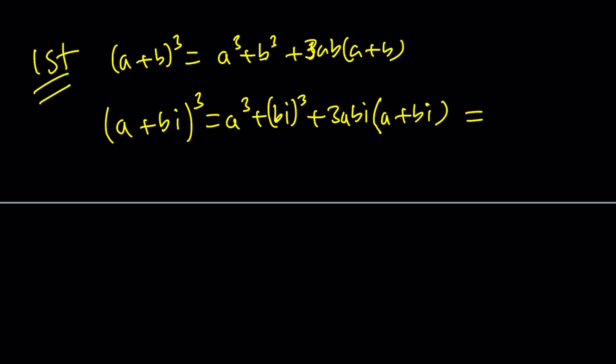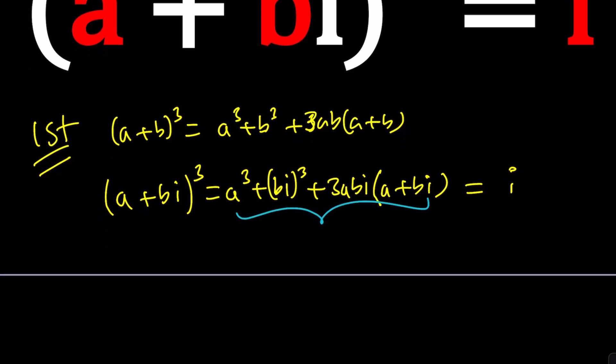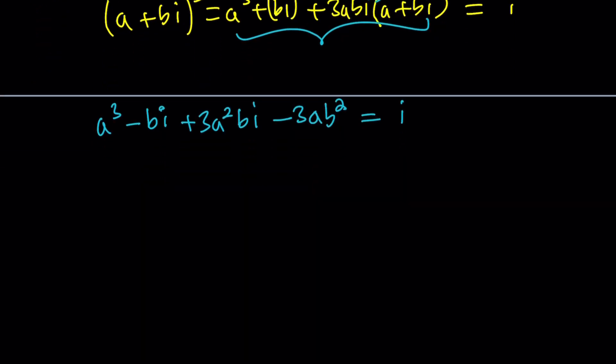And now this is supposed to equal I. Let's go ahead and simplify the left hand side. I cubed is negative I, so this is going to become A cubed minus B I. And then here we're going to distribute, it's going to give us 3A squared B I. And I times I is I squared, that's negative 1. We're going to get negative 3AB squared. Let's put the real parts together. A cubed minus 3AB squared plus 3A squared B minus B cubed as the imaginary part times I equals I.